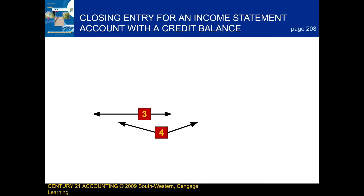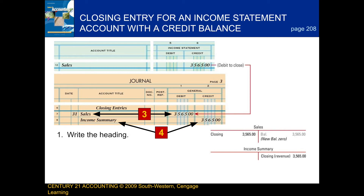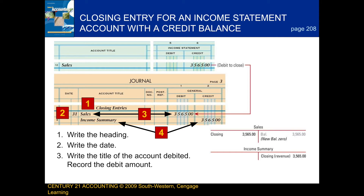Next, we're going to be talking about the closing entry for an income statement account with a credit balance. When we record this closing entry, there are a few steps we follow. First, we write the heading. Next, we write the date. After that, we write the title of the account debited and then record the debit amount. And finally, we write the title of the account credited and then record the credit amount.